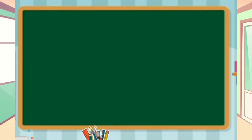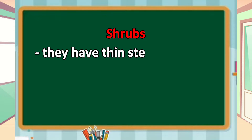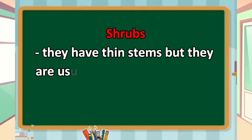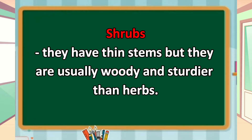The second classification are the shrubs. They have thin stems, but they are usually woody and sturdier than herbs. Samples of shrubs: